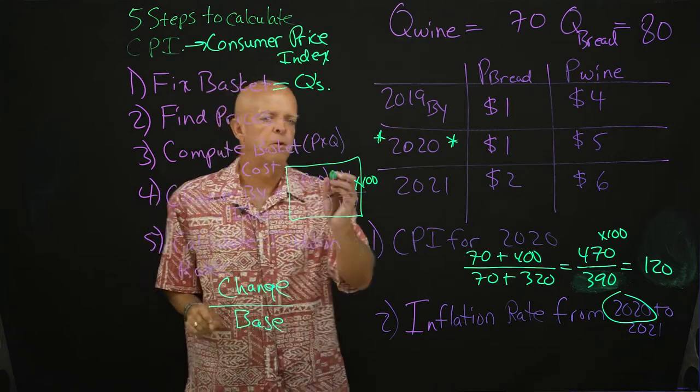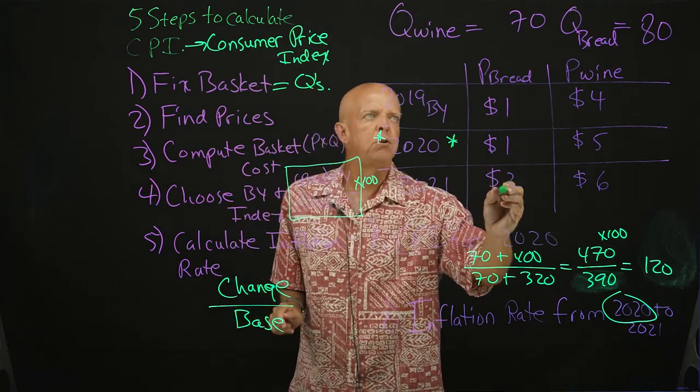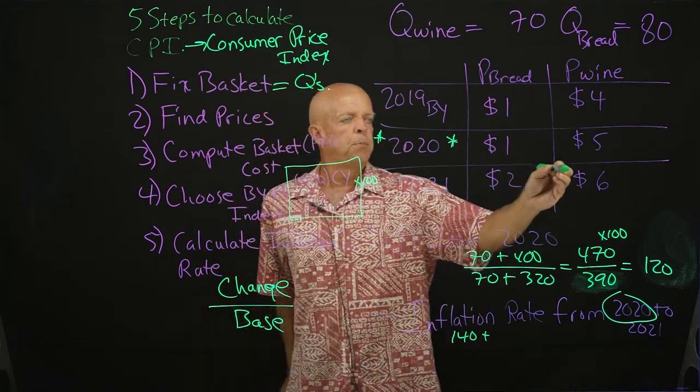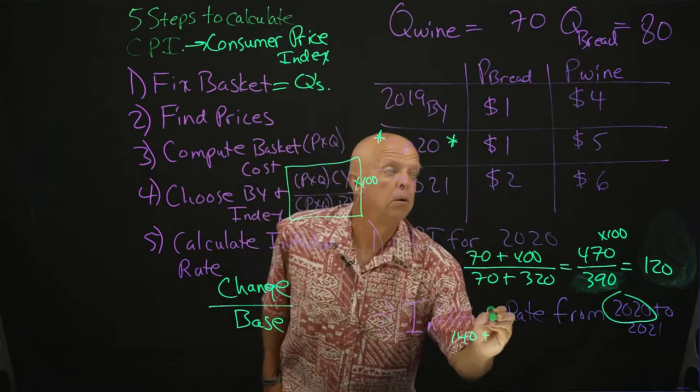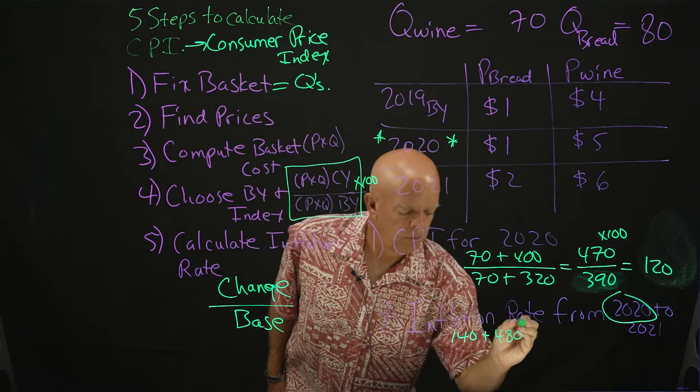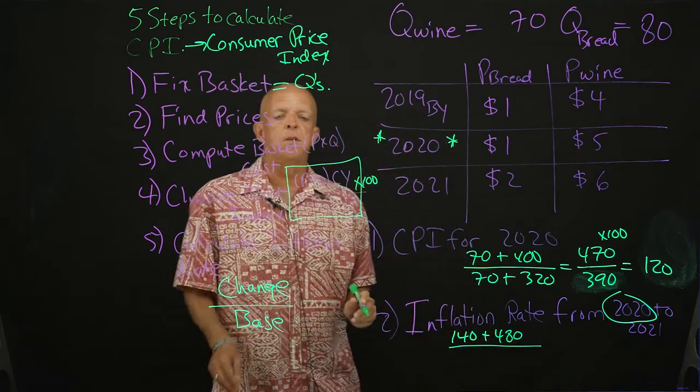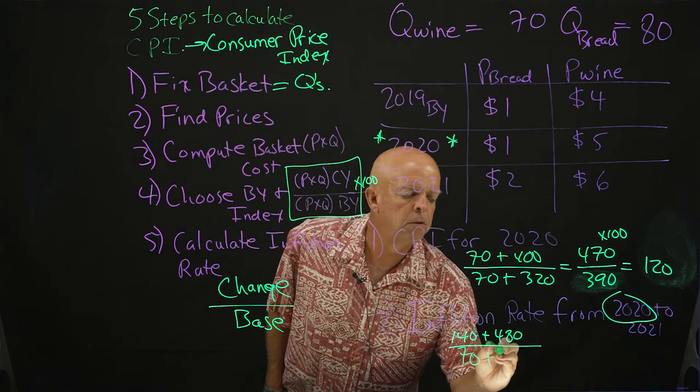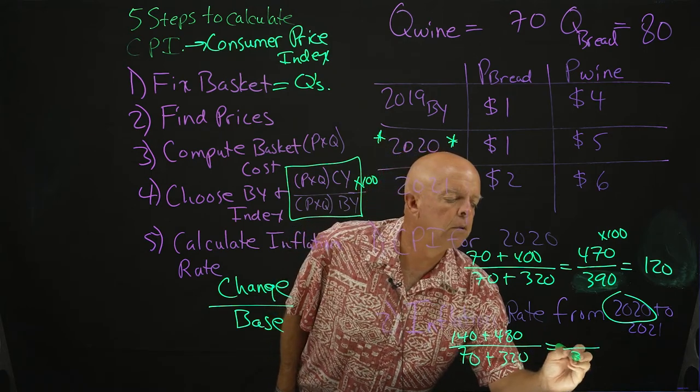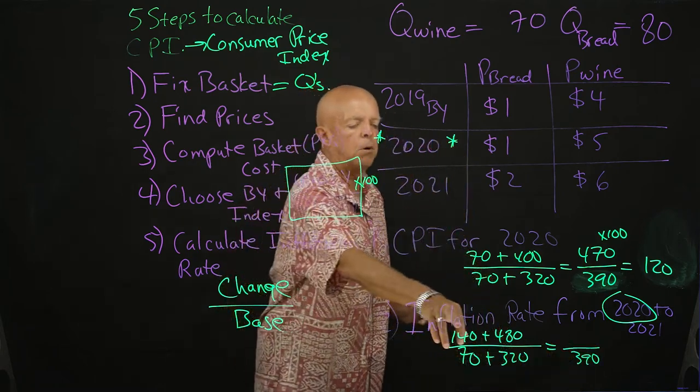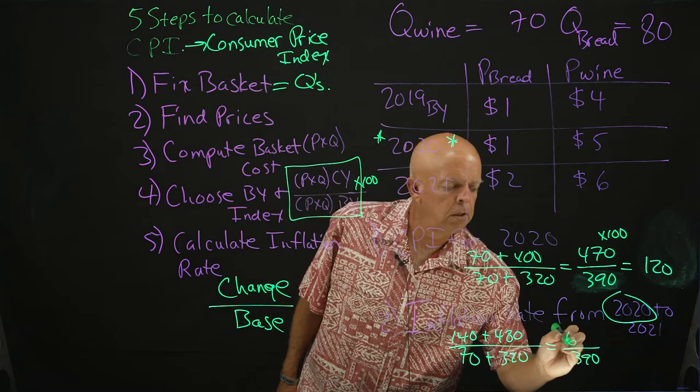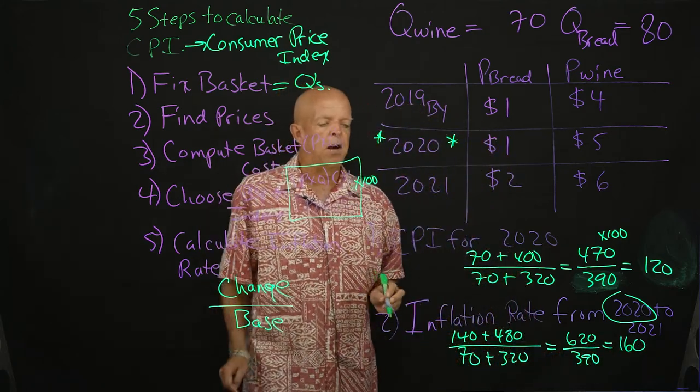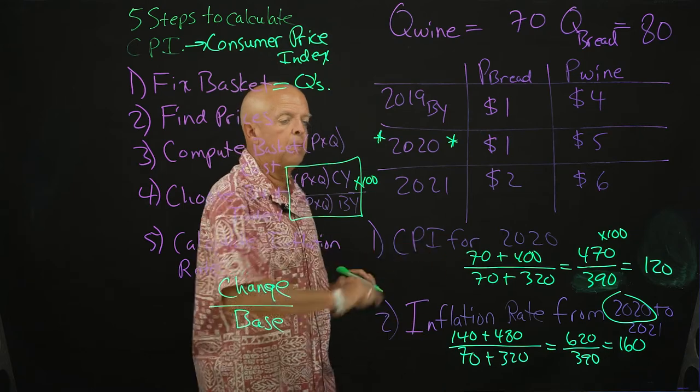For the current year it's going to be 2 times 70, 140, plus 6 times 80, 480, over the base year price times quantity, which should be the same as this: 70 plus 320. That's going to give us 390. And this number, 140 plus 480, is 620. And that's going to give us 160. And now we have the CPI for 2021 and the CPI for 2020.